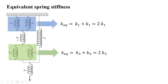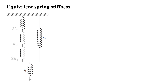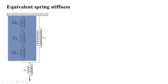So we have equivalent stiffness 2k1 on one side, 2k3 on the other side, and the middle spring has stiffness k2. These three springs — with stiffnesses 2k1, k2, and 2k3 — are now in series with each other, as shown in the arrangement here.